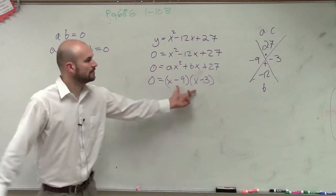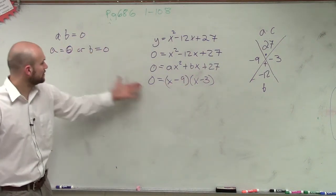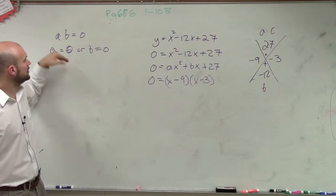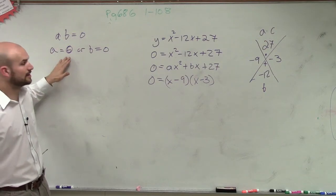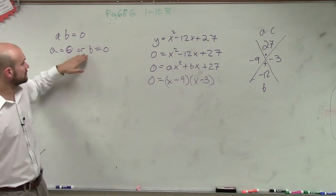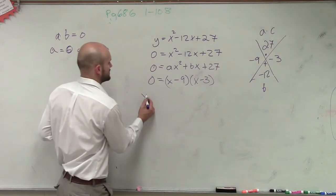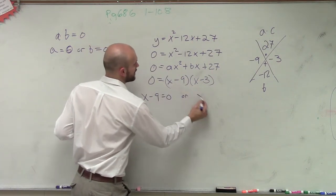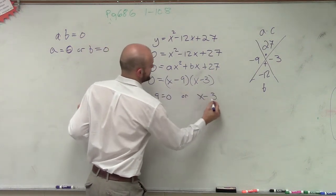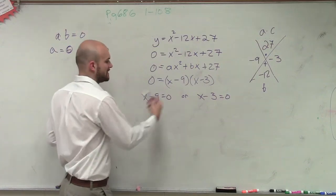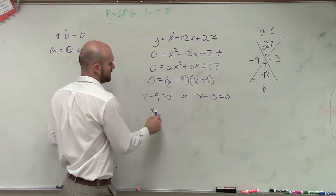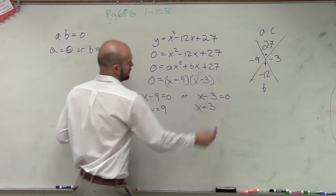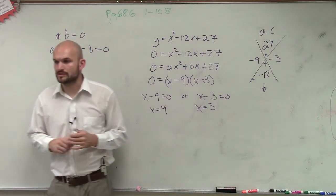Now we have a product equal to zero. When we have a product equal to zero, we can say one of those factors equals zero or the other. So now we can say x minus 9 equals zero, or x minus 3 equals zero. And then we can now solve. Those are the zeros of your equation.